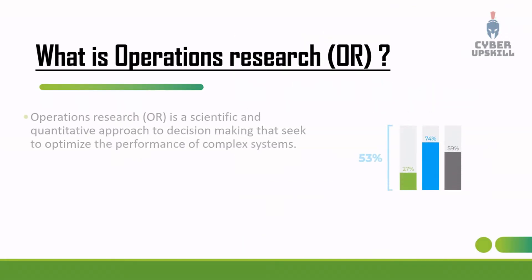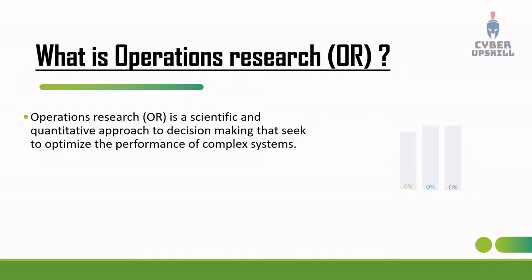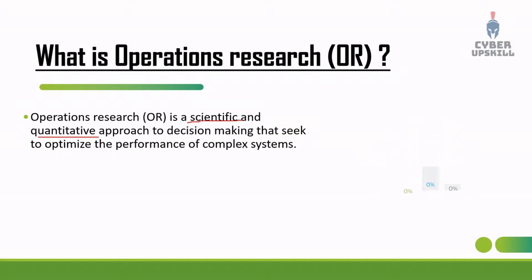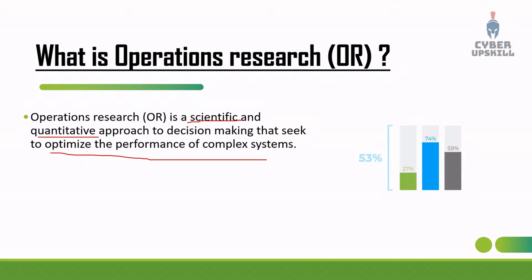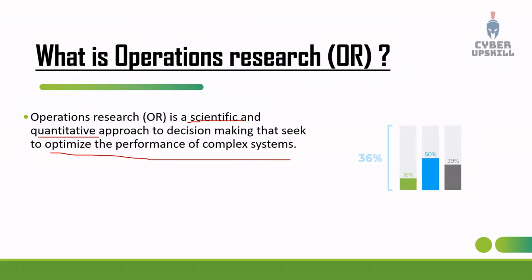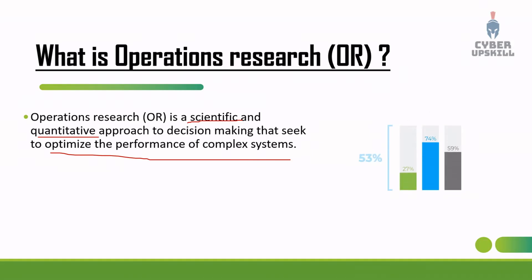What is operation research? Operation research is a scientific and quantitative approach to decision making, to optimize the performance of a complex system. We need to simplify and solve a complex system. The total process is operation research. Quantitative means numbers, scientific means a process, and the process is followed by numbers. The complex system is how we need to simplify.